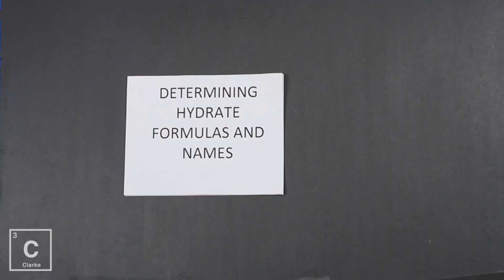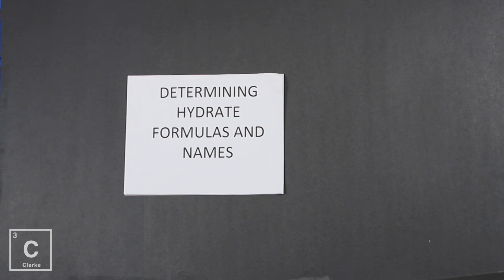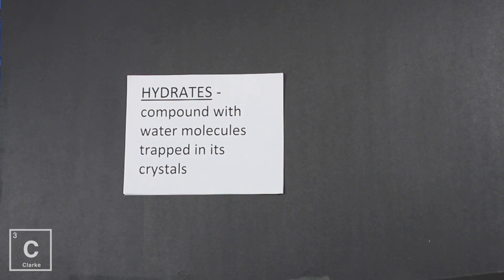We're going to determine the hydrate formula and name. This is a lot like empirical formula — close enough to where if you get empirical formula, hydrate is gonna be really easy. But first let's talk about what a hydrate is. A hydrate is a compound with water molecules trapped inside, or just an ionic compound with water attached to it. I'm hoping you saw the word hydrate and expected something to be about water.